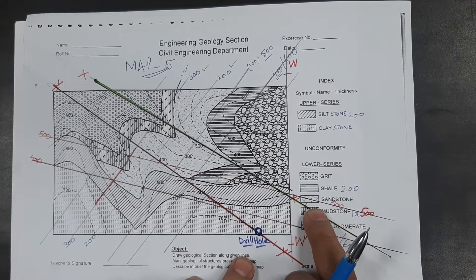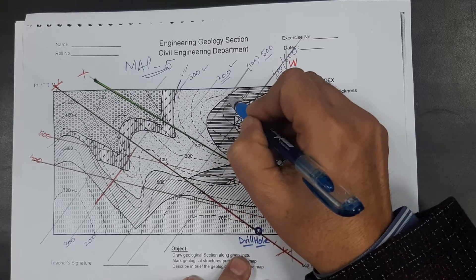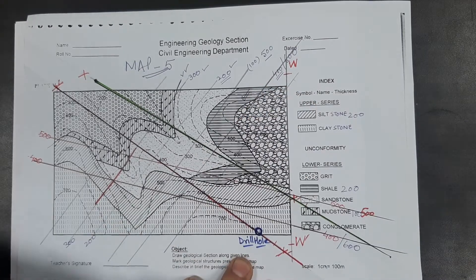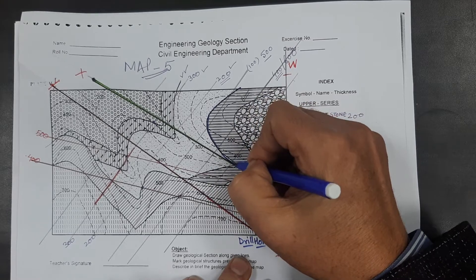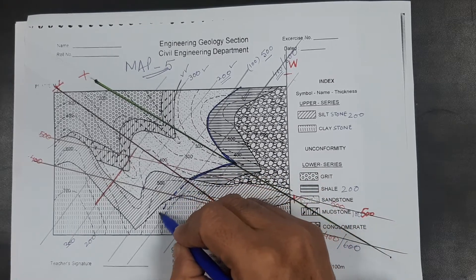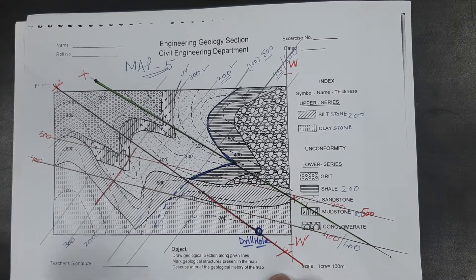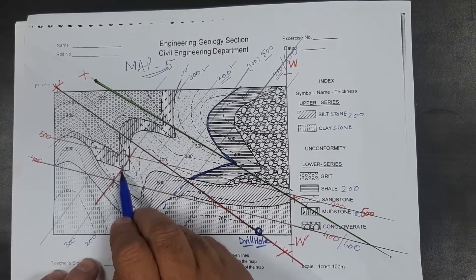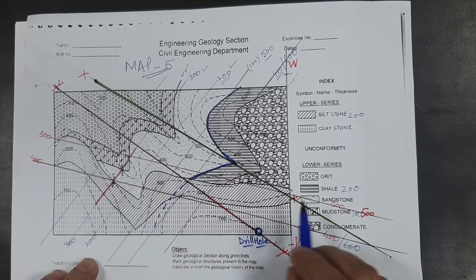For sandstone, we are not getting any strike line that cuts both contacts. The strike line of 200 is on the lower contact of the sandstone but is not touching the upper contact. The upper contact of sandstone is exposed on the ground only up to a certain point. Some students have tried to work out the thickness of sandstone from a strike contour line of 300 and a point of 400, and concluded that the thickness of sandstone is 100 meters.